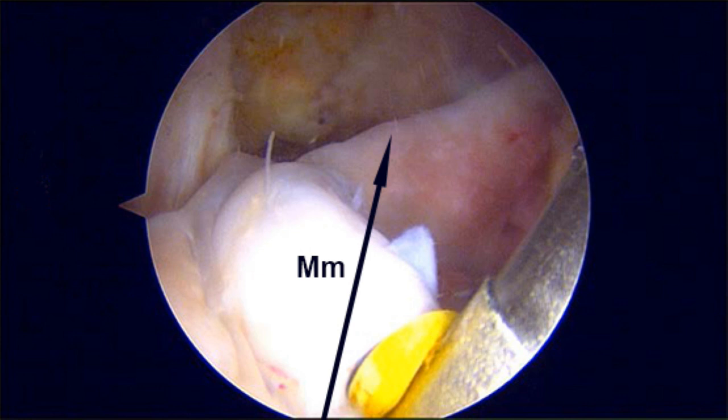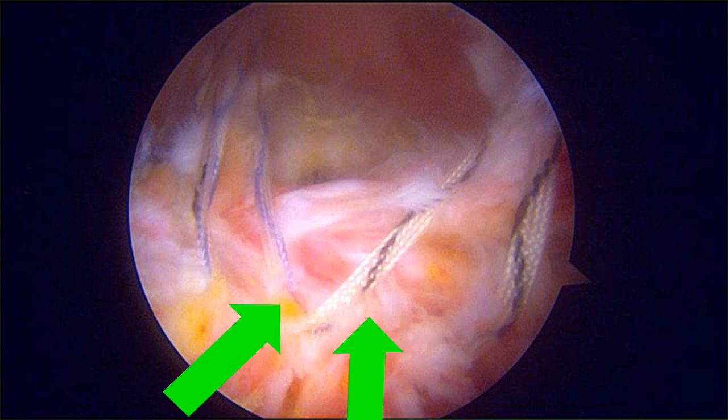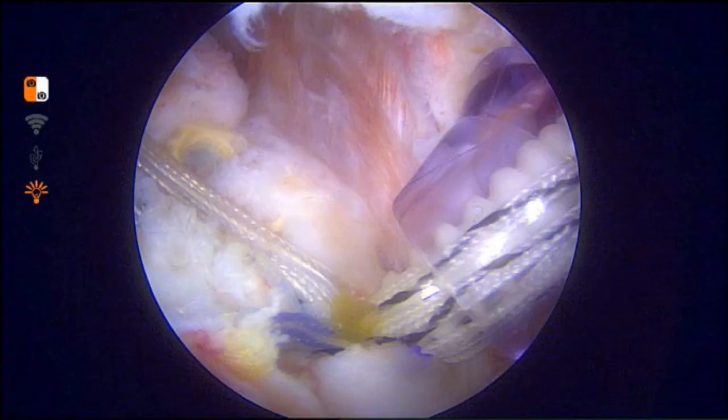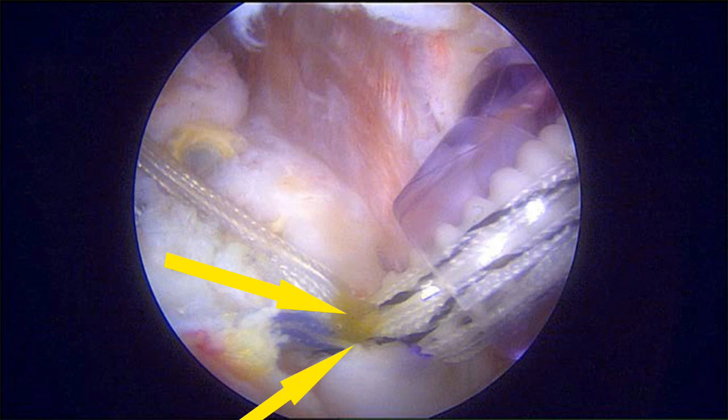Second margin convergence suture passed. Medial row: triple-loaded Arthrex FiberTack RC anchor placed anterior medially and double-loaded posteriorly. All suture tapes are tied and then brought to an anterior lateral position at the greater tuberosity. Here, ten suture tapes are passed and secured through a single swivel lock anchor placed anterior laterally.